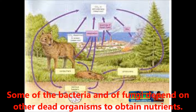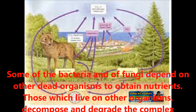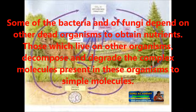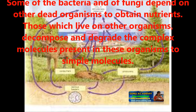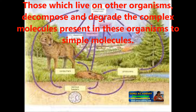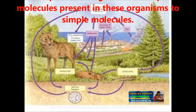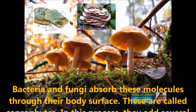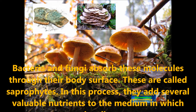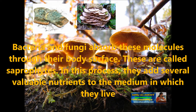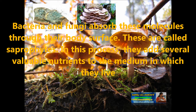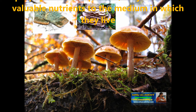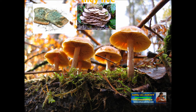Some bacteria and some fungi depend on other dead organisms to obtain nutrients. Those which live on dead organisms decompose and degrade the complex molecules present in these organisms into simple molecules. Some bacteria and fungi absorb these molecules through the body surface — they are called saprophytes. In this process they add several valuable nutrients to the medium in which they live, such as water or soil.